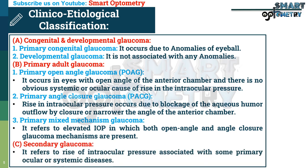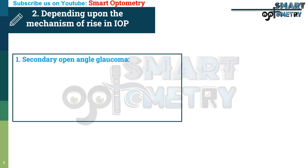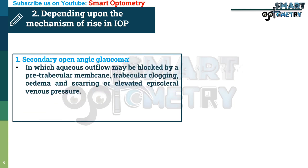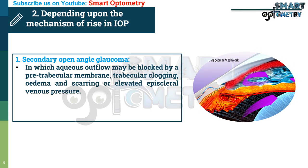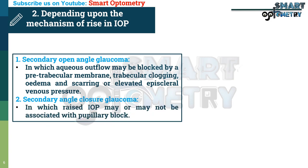C. Secondary glaucoma — refers to rise of intraocular pressure associated with some primary ocular or systemic diseases. Depending upon the mechanism of rise in IOP: 1. Secondary open angle glaucoma, in which aqueous outflow may be blocked by a pre-trabecular membrane, trabecular clogging, edema and scarring, or elevated episcleral venous pressure. 2. Secondary angle closure glaucoma, in which raised IOP may or may not be associated with pupillary block.